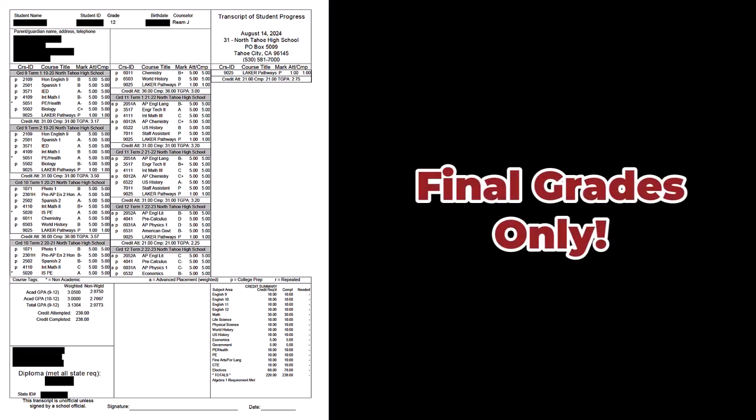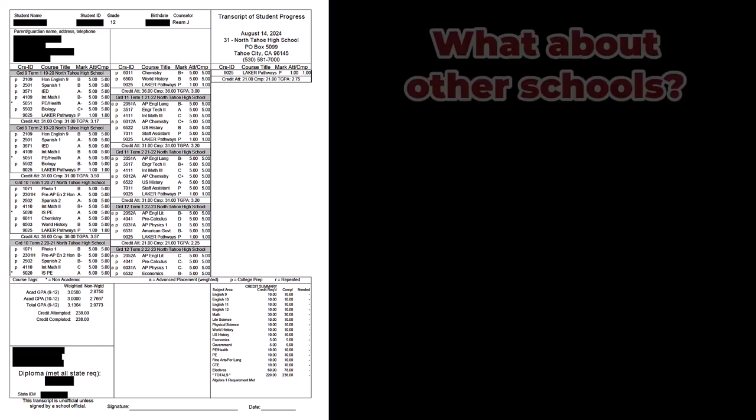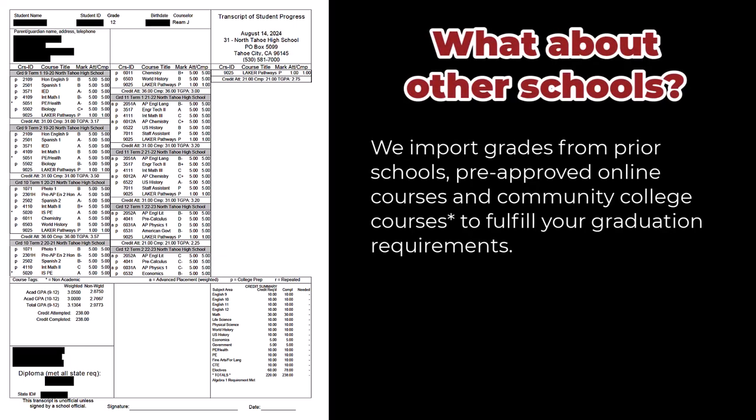Before we dive into the four components, what goes on a transcript are final grades. At North Tahoe High School, students receive two final grades during a typical school year — one in January and one in June. We don't report progress reports on the transcript. If you take classes through other programs, like an online school or Sierra College, those are also typically reported on your high school transcript and will show up in different places.